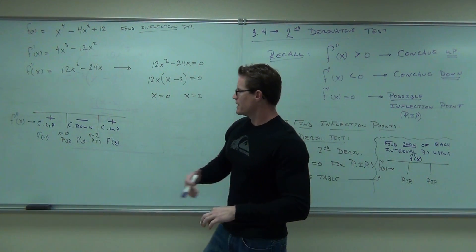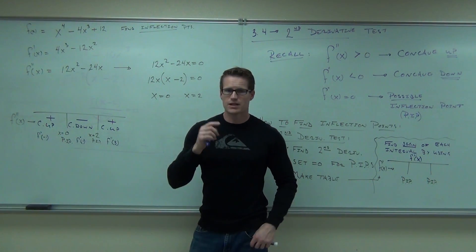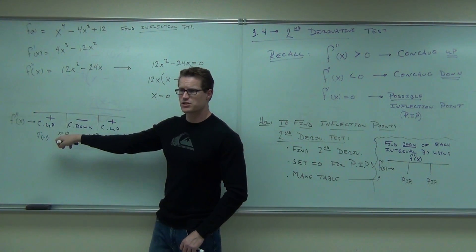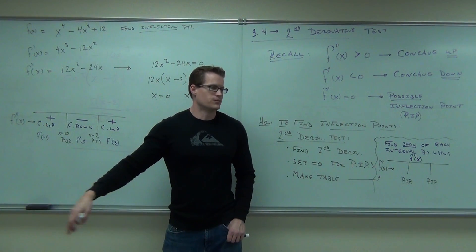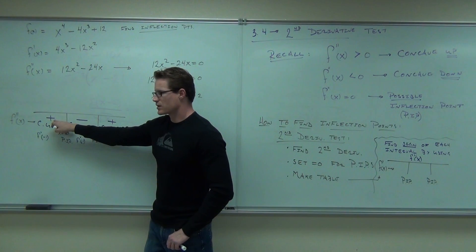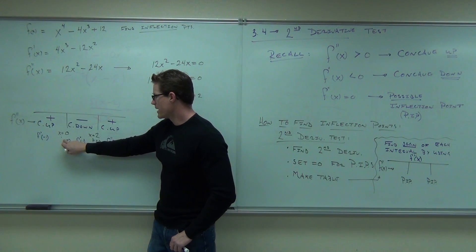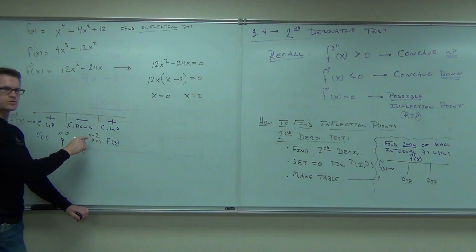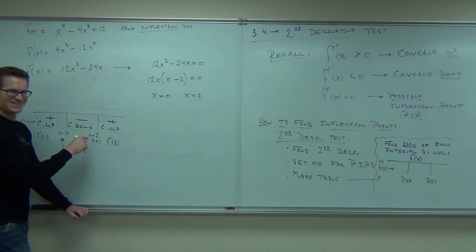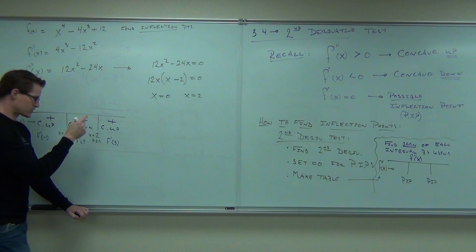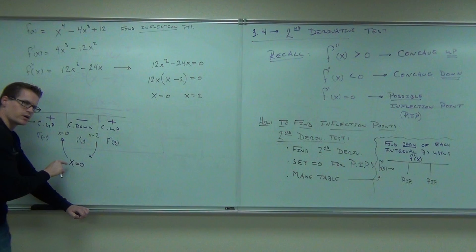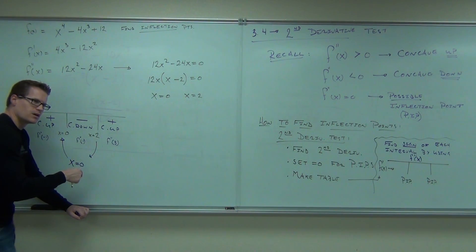Is that an actual inflection point? Does the concavity change? From here to here, does it change? Then that's an inflection point. What if that had been plus and plus? Would that be an inflection point? That happens occasionally, but not often. Especially with polynomials you get a sign change. If it goes concave up to concave down, that's certainly not a possible anymore — that is an inflection point. Concave down to concave up: did it change? Then that's certainly an inflection point.